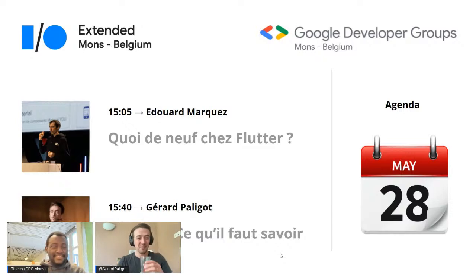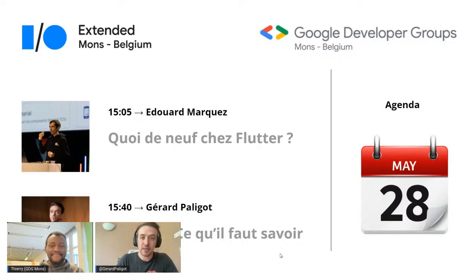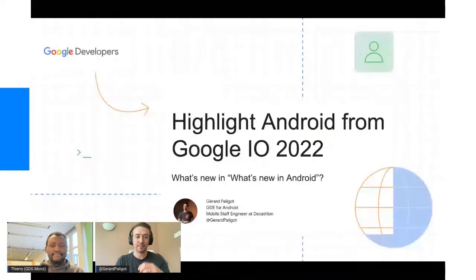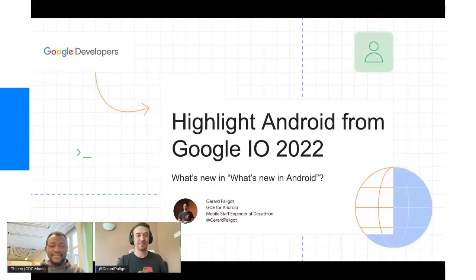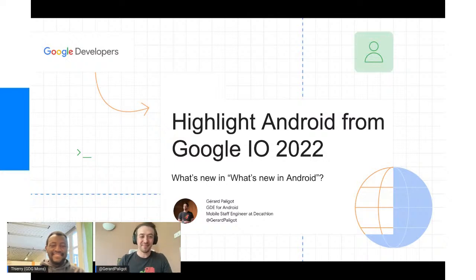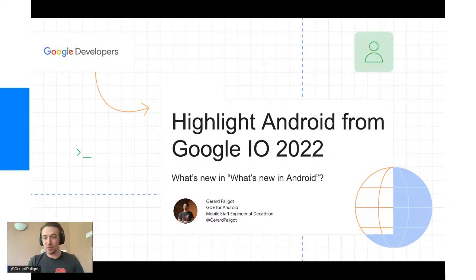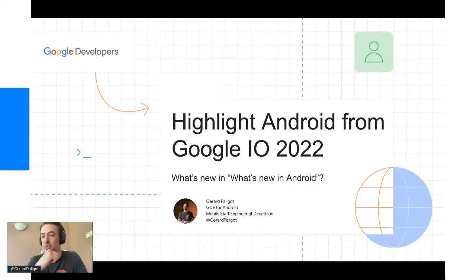C'est d'autant plus un privilège pour moi que je suis belge, vivant à Lille depuis quasiment dix ans, et faire mon premier talk en tant que GDE dans mon pays d'origine c'est tout un symbole. Je suis Gérard Paligo, très récemment Google Développeur Expert pour Android, et aussi Mobile Staff Engineer chez Decathlon. Si vous voulez me suivre sur Twitter pour l'actualité Android : @girardpaligo. On démarre avec le What's New in Android — un condensé de toutes les annonces.